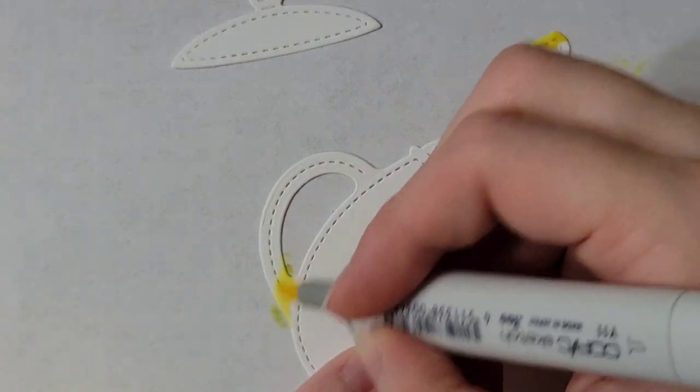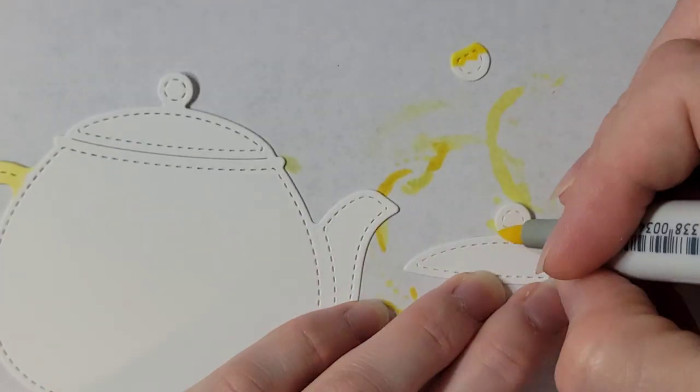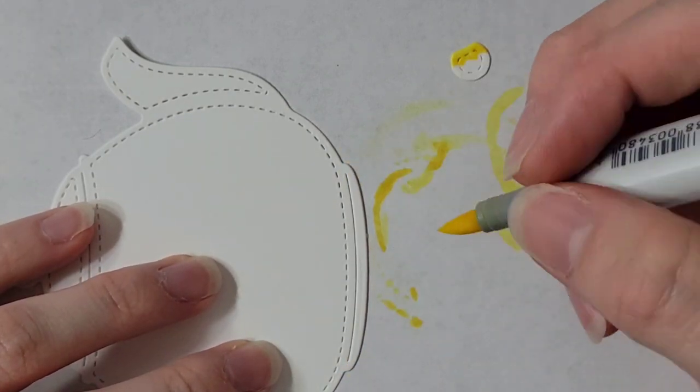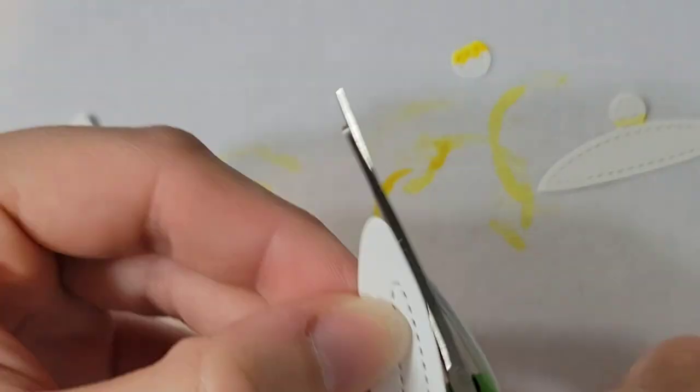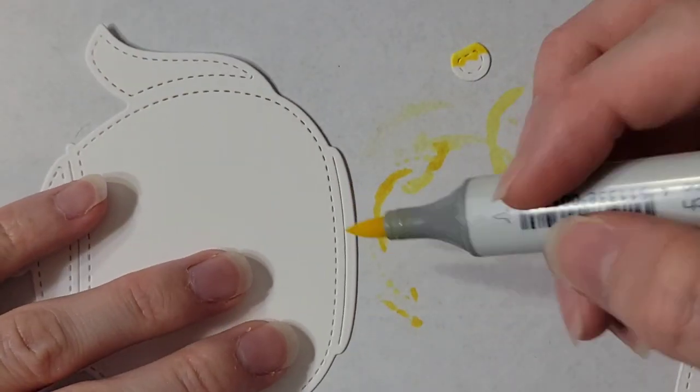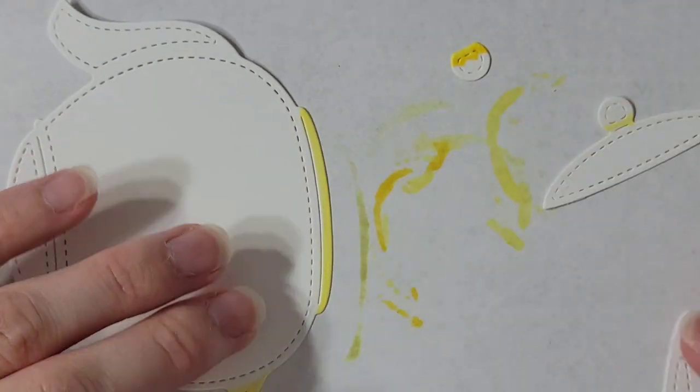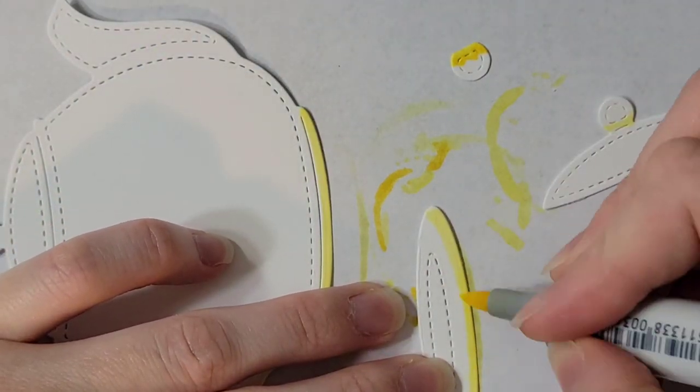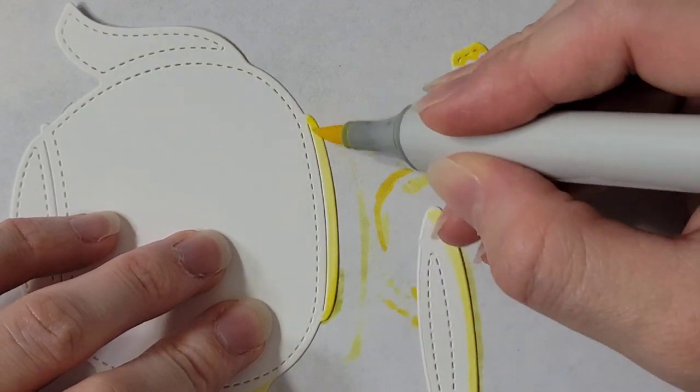If you hadn't noticed, this is a Beauty and the Beast themed card. So right now I'm doing Mrs. Potts. Since she has a decorative bottom piece, I'm taking this plate die from the mug set and I'm going to color this as the bottom of the teapot. It was actually a really good size and shape for this.